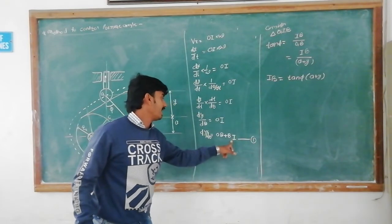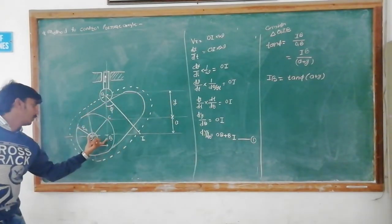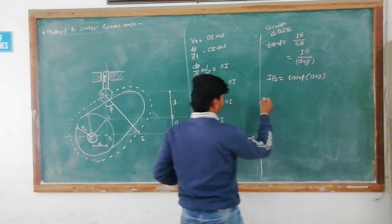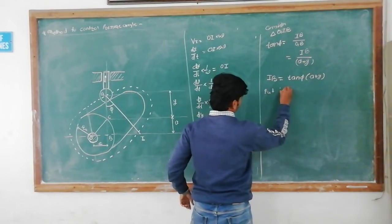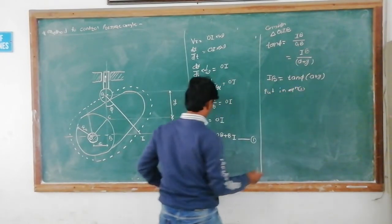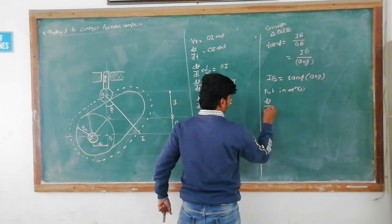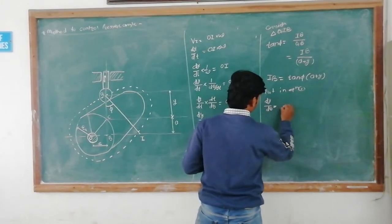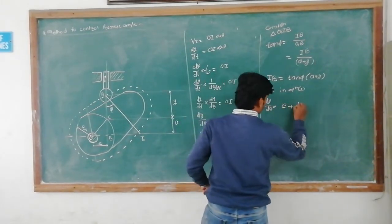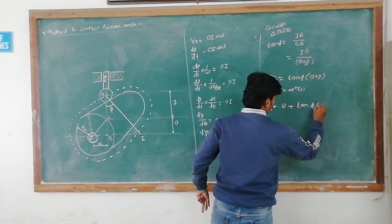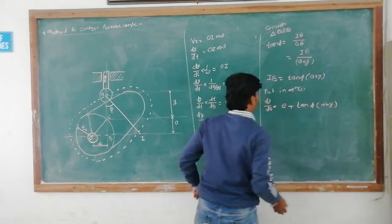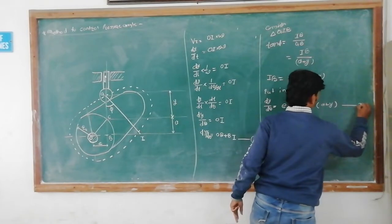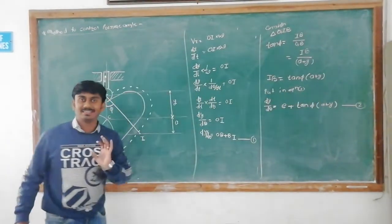In equation 1 we need IB and OB. OB is equal to E. Putting the value of IB in equation 1: dy/dθ = E + tan φ · (A + Y). We mark this as equation 2.